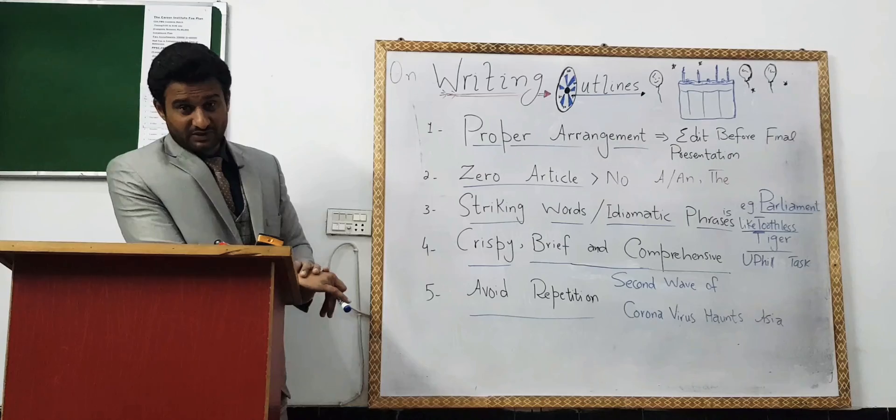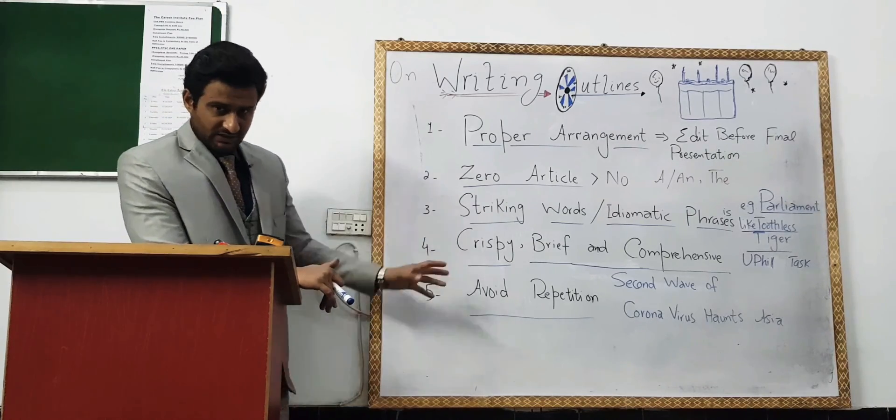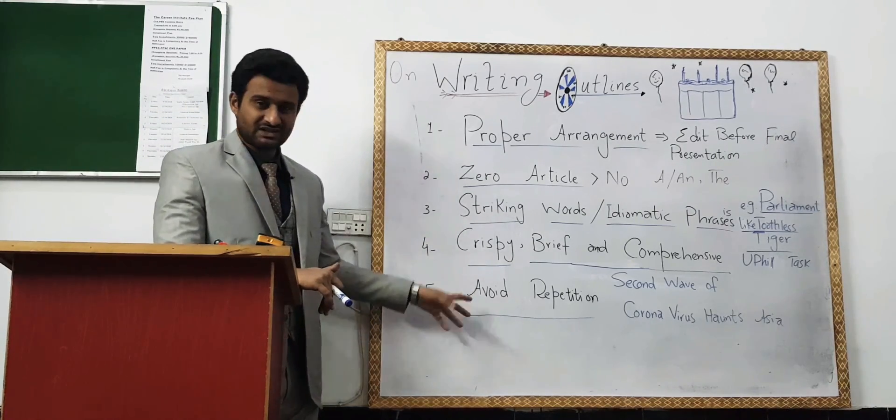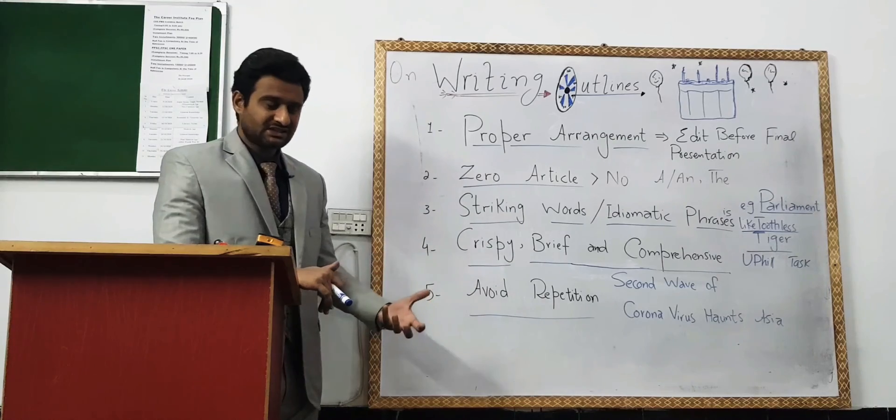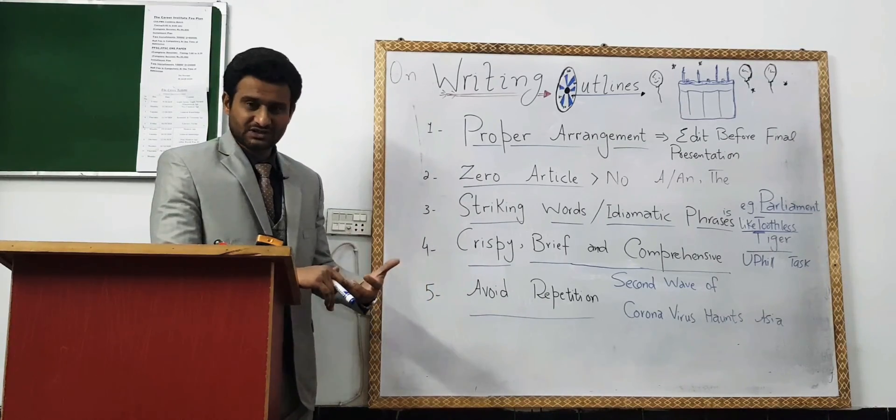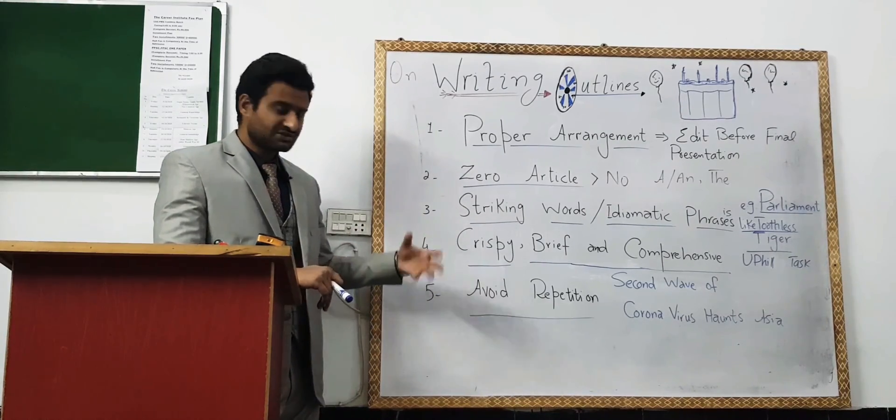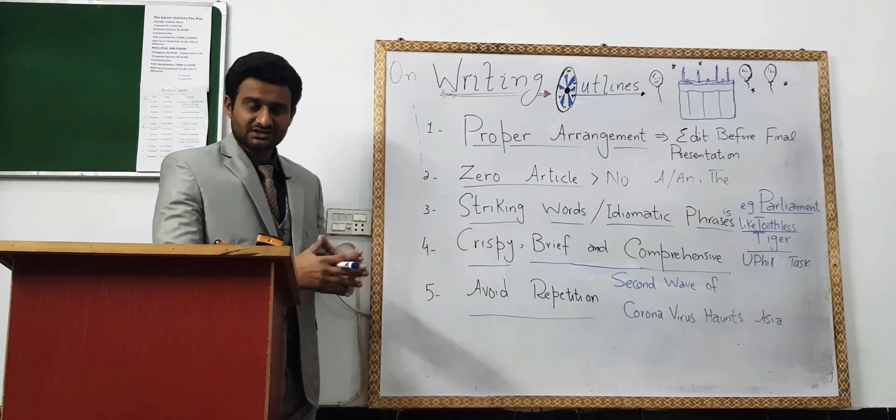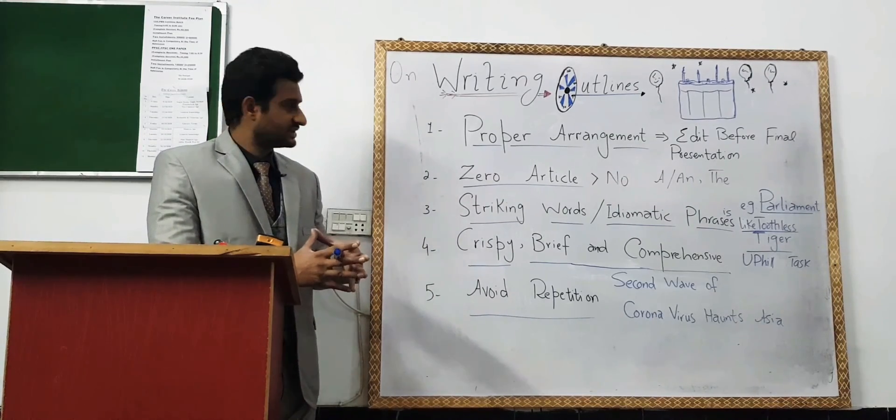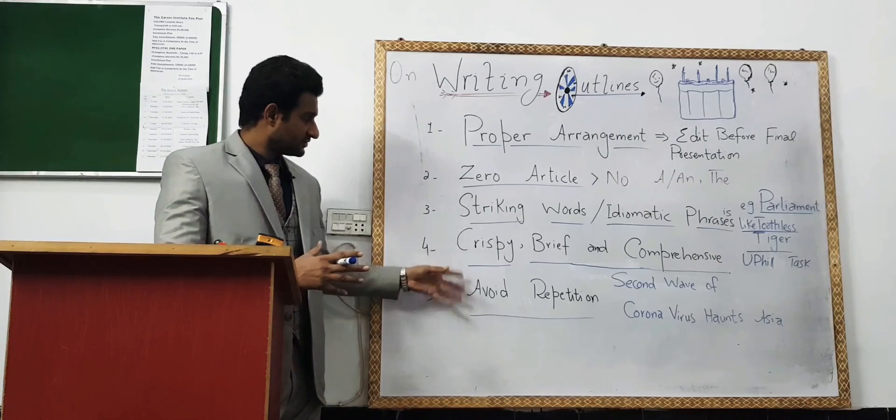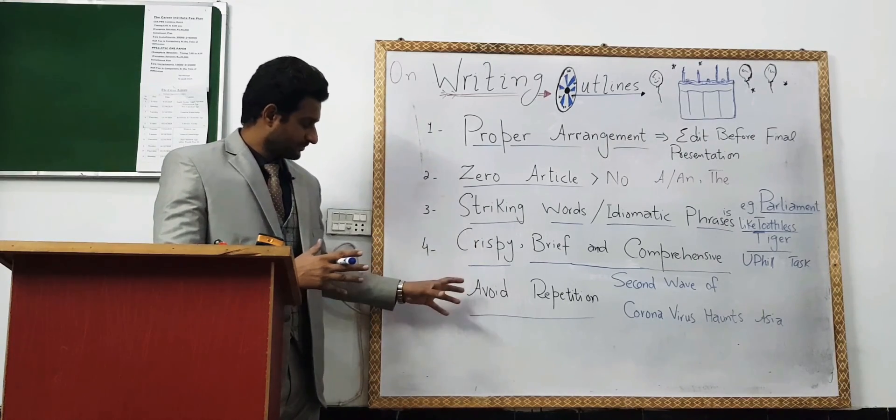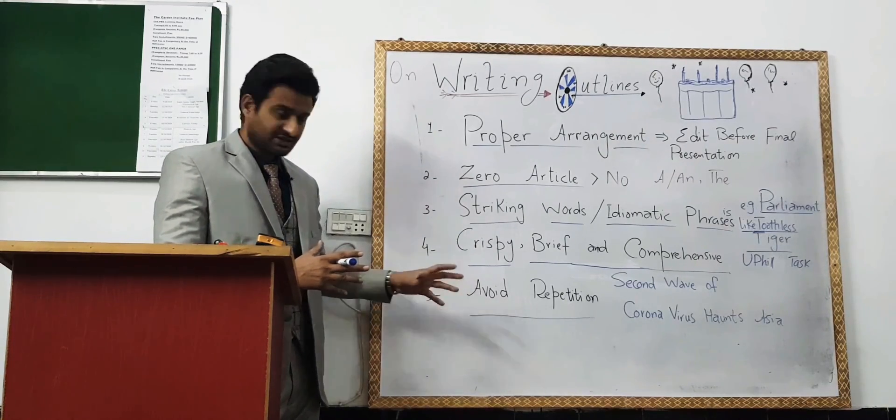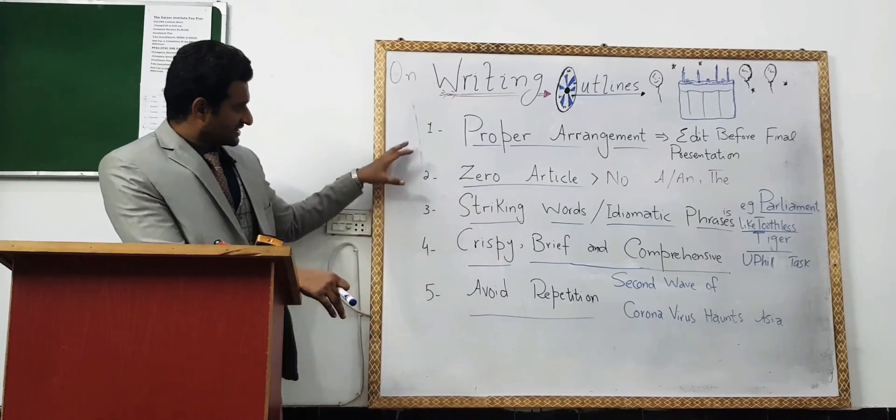And number five, avoid repetition. That is very important. Whenever you are going to write outlines, you should not use same words again and again because it will show that you are an immature writer and it will lose your beauty. You should try to raise your word bank, increase your ideas and increase your words. Otherwise, you won't be able to give it a very interesting look or outlook.